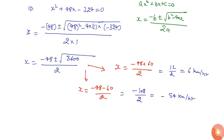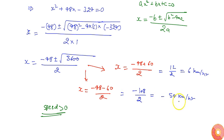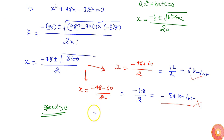Since the speed of the stream is always greater than zero, the speed cannot be negative. So we do not consider minus 54. Therefore, the speed of the stream is 6 kilometres per hour.